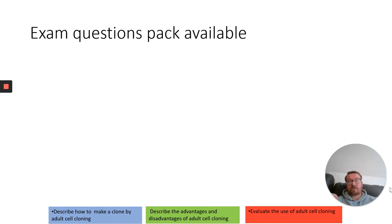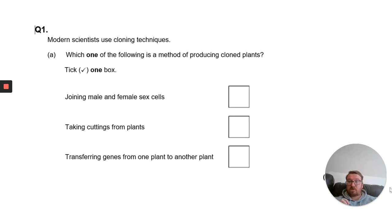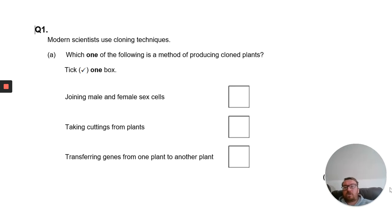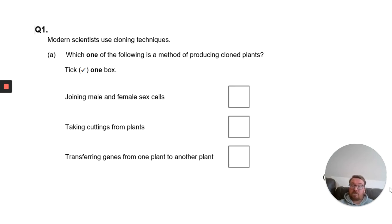We're going to look at a few exam questions now. Number one: modern scientists use cloning techniques — tick the box of the cloning technique used to produce cloned plants. The correct answer is taking cuttings from plants.